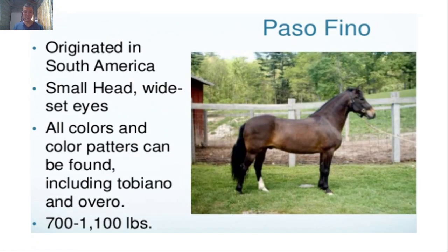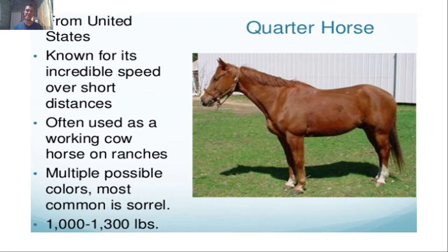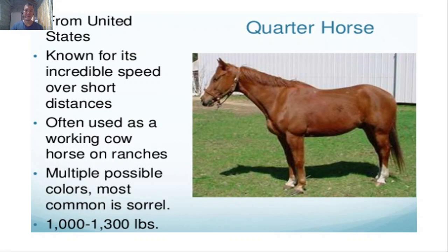The Paso Fino is from South America, with a small head and wide-set eyes. It comes in many color patterns including Tobiano and Overo, and weighs 700 to 1,100 pounds. The Quarter Horse from the US is known for incredible speed over short distances and is often used as a working cow horse for farm work. It comes in multiple colors, including sorrel — a reddish or dark brown coat.